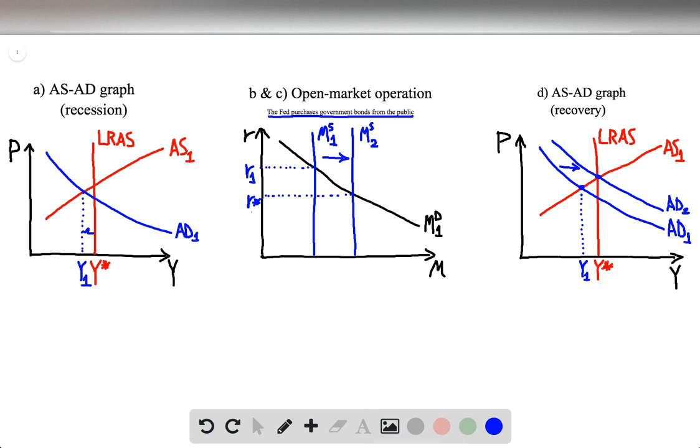And thus, the new money supply curve dissects the money demand curve at a different point, resulting in the lower interest rate R*, which is the natural rate.